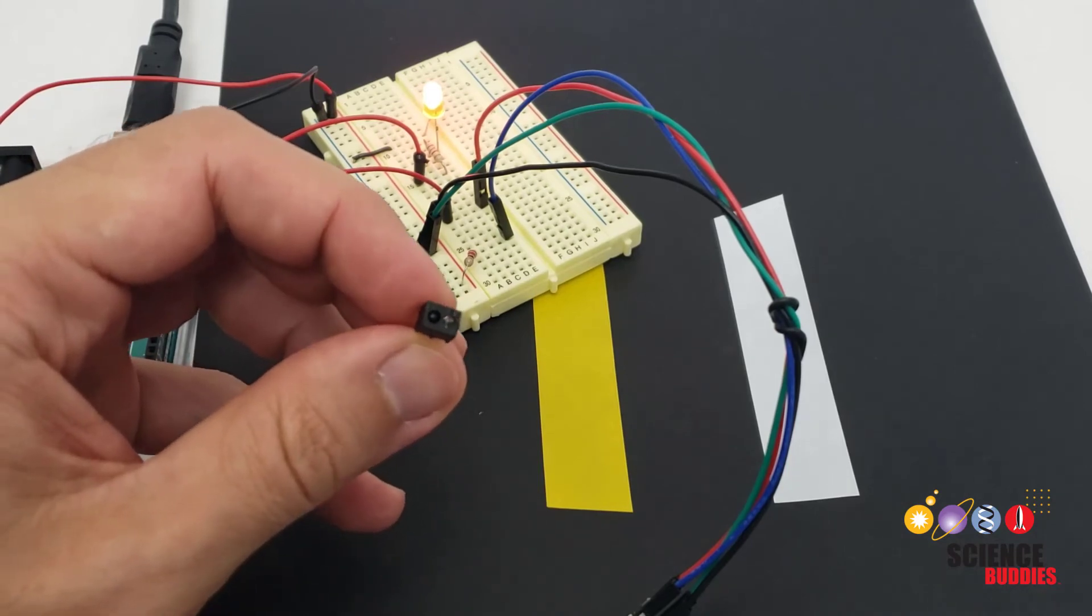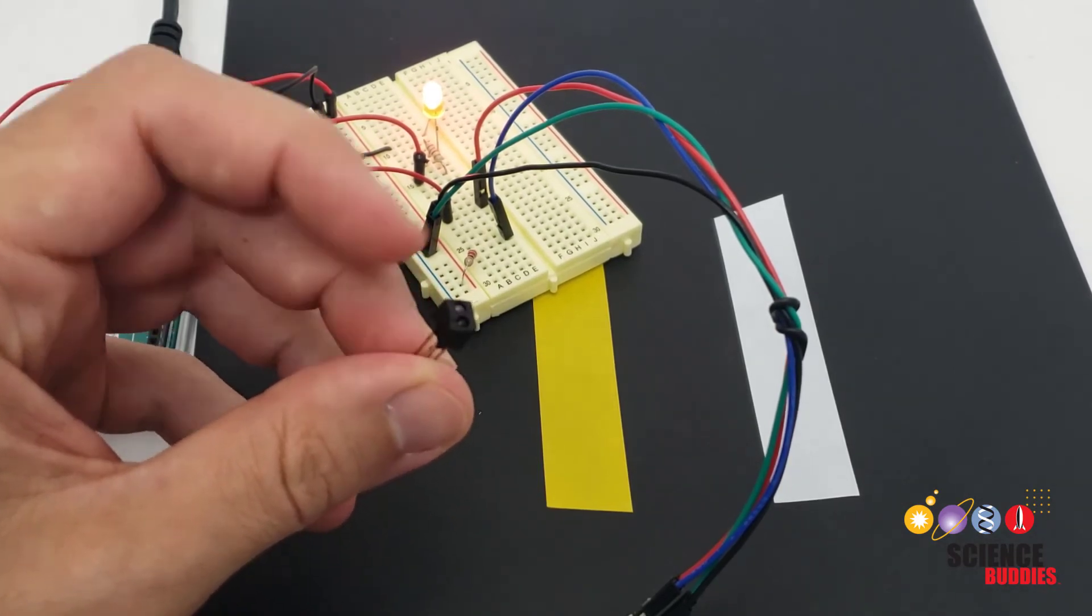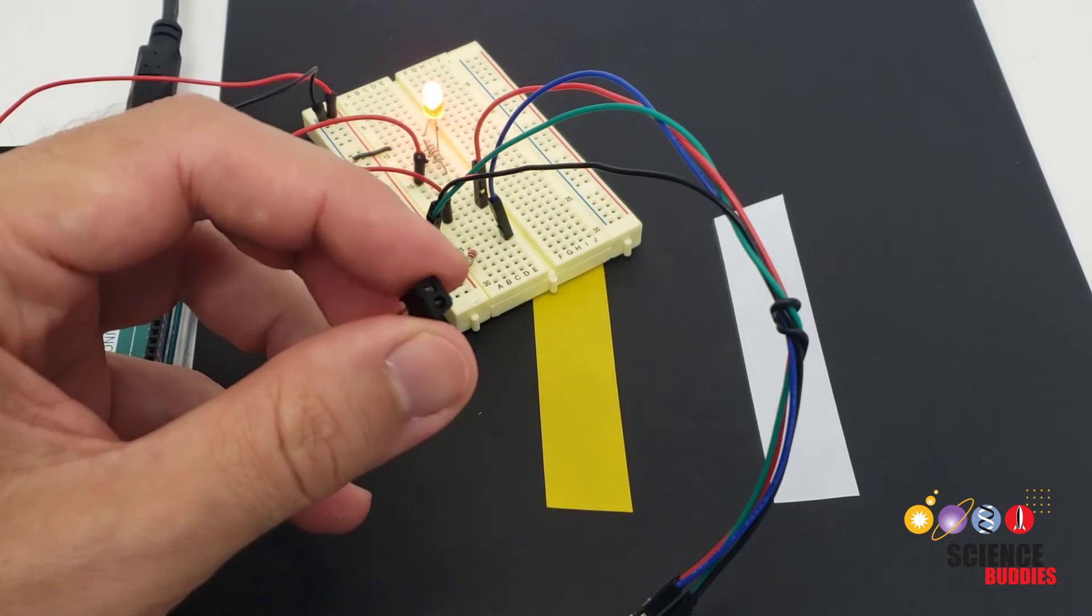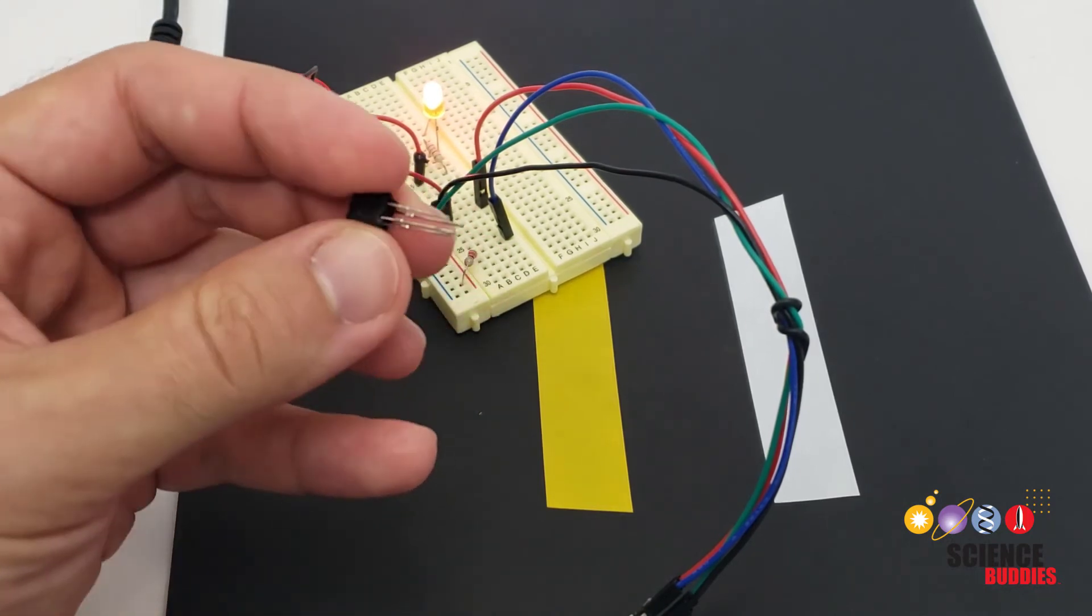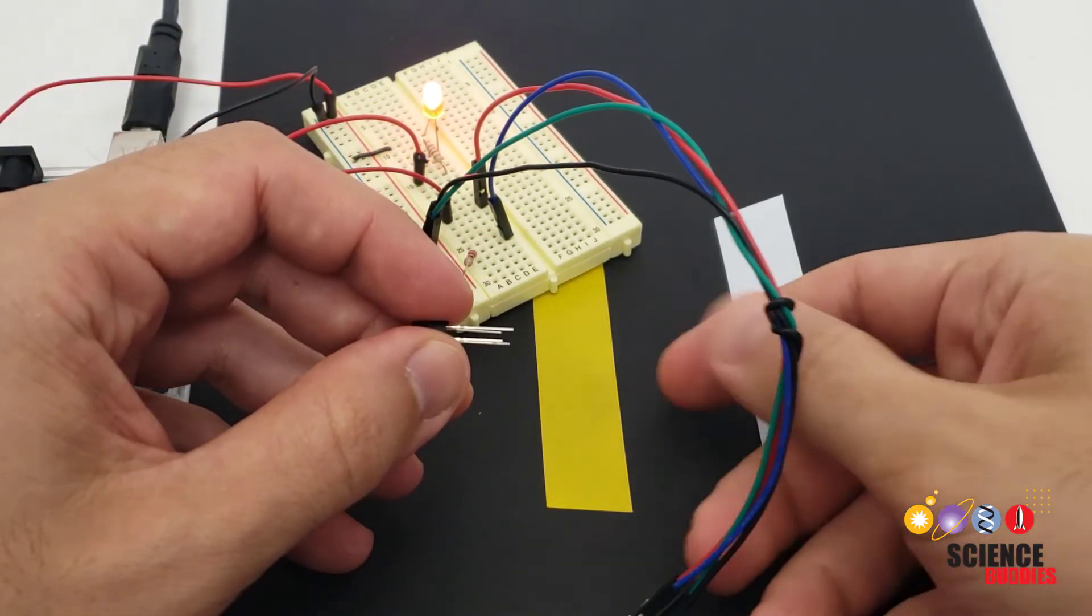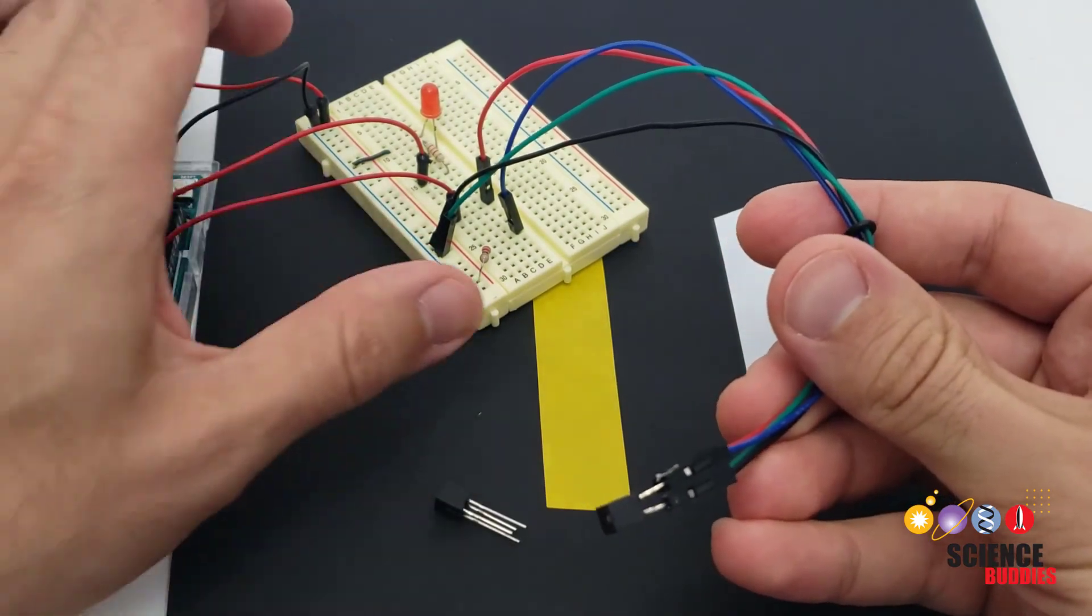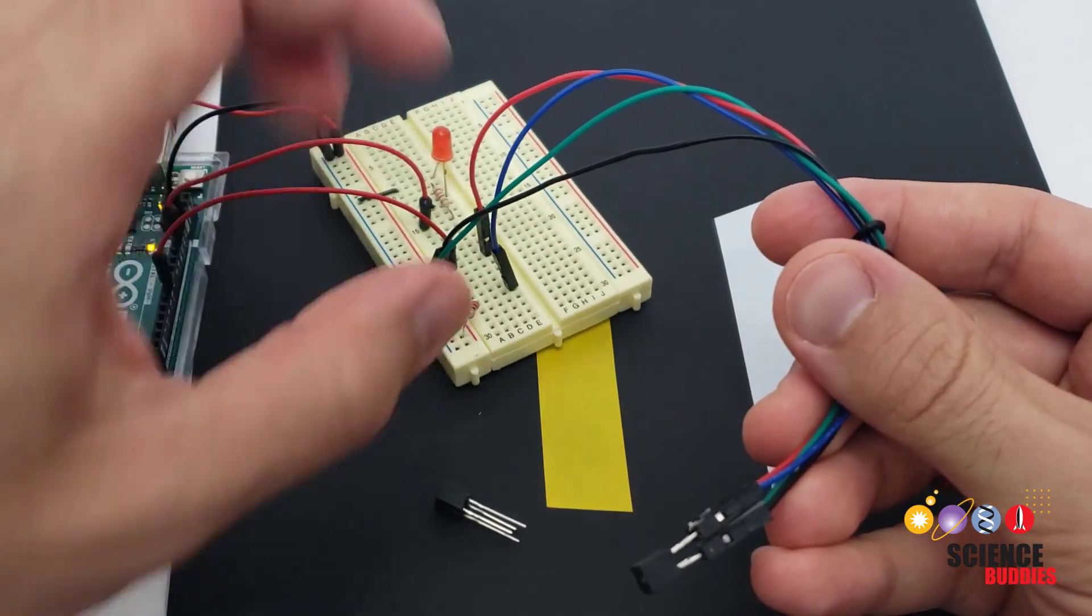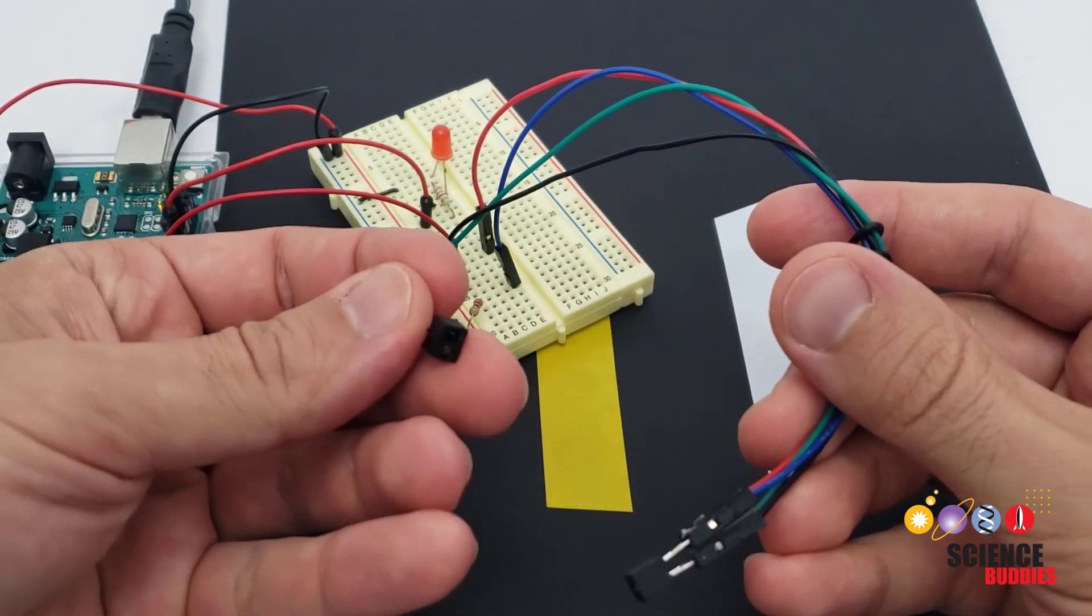So if you have a second sensor pause the video here see if you can use the circuit diagram and code shown earlier in the video to connect the second sensor the same way you connected the first one and then modify the program so you can light up a second LED using the second sensor.